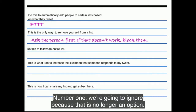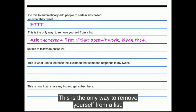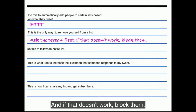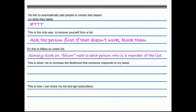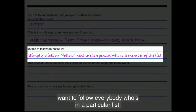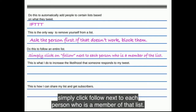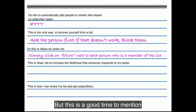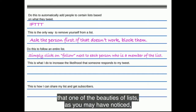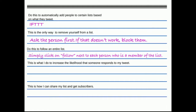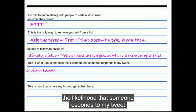The only way to remove yourself from a list is to ask the person first, and if that doesn't work, block them. If you want to follow everybody in a particular list, simply click follow next to each person who is a member. One of the beauties of lists is that you don't have to be following someone in order to add them to a list.